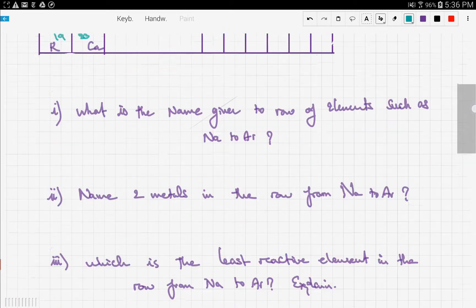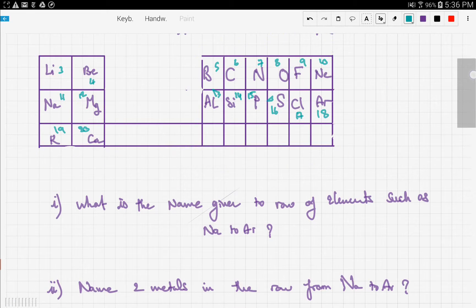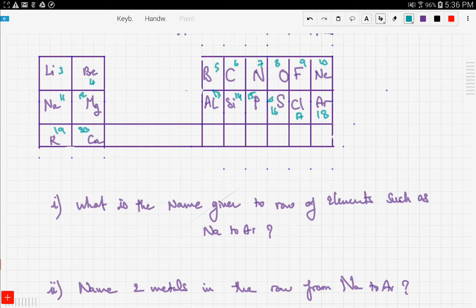Now let's move on to the question. It asks: what's the name given to the row of elements such as sodium to argon? This is called a period.